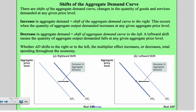Conversely, decreases shift the aggregate demand curve to the left, meaning the quantity of aggregate output demanded falls at any given aggregate price level. Keep in mind that whether the aggregate demand curve shifts to the right or to the left, the multiplier effect either increases or decreases total spending throughout the economy.